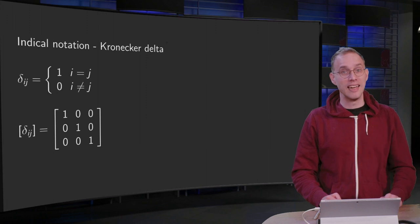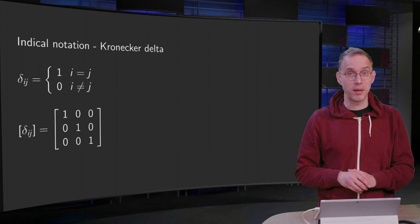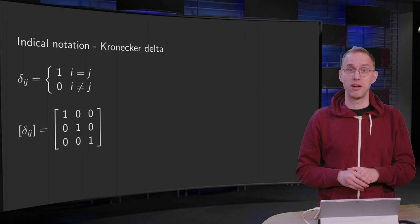In tensor notation there are two symbols that you will encounter a lot: the Kronecker delta and the permutation symbol. Both of them can be used to simplify expressions. In this video we will first encounter the Kronecker delta.